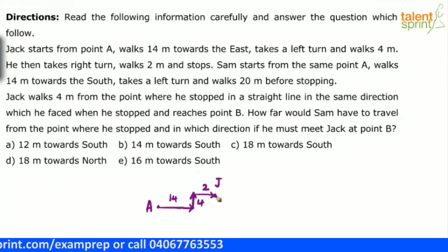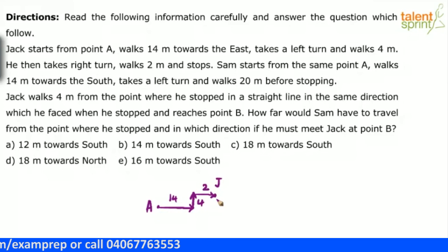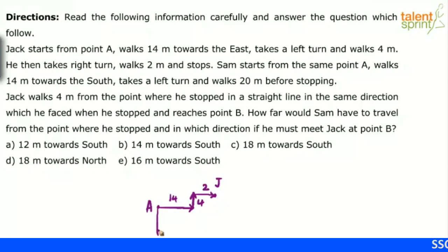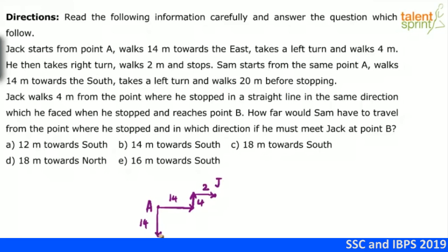So this is Jack's final position. He started from point A and stopped here. Then look at the next point: Sam starts from the same point A. Sam has also started from the same point A and walks 14 meters towards south. He has walked 14 meters towards south and stopped here.